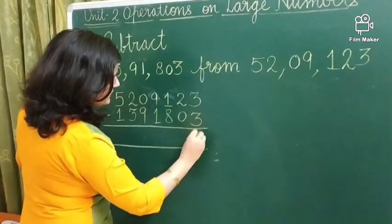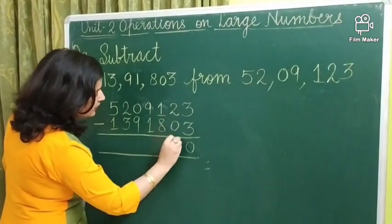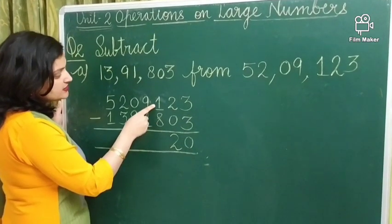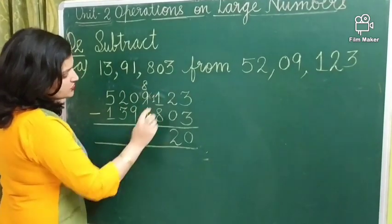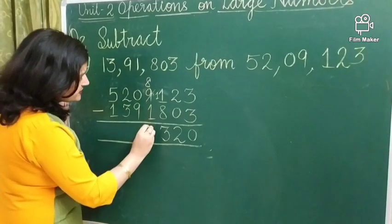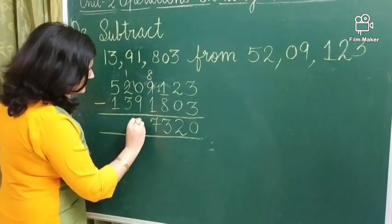3 less 3, 0. 2 minus 1, 1. 2 minus 0, 2. Now, we can't subtract 8 from 1. So, we have to borrow. So, 11. So, 11 minus 8, 3. 8 minus 1, 7. Again, so, 10 minus 9, 1.